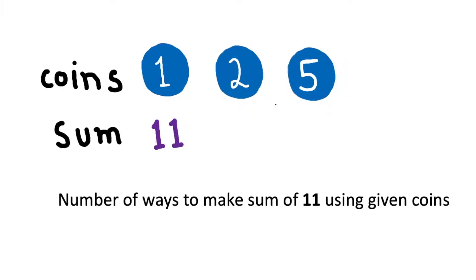Today we will discuss the coin change problem. We are given coins of denomination 1, 2, and 5, and we need to make a sum of 11. There can be many ways to make a sum of 11 using these coins, but we need to find the minimum number of coins we can use to make that sum. One important point: there is an infinite supply of all these coins, so we can use any coin denomination as many times as we want.